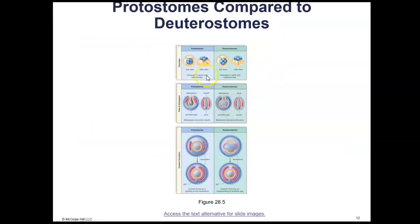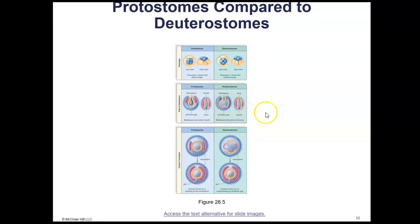Here are some images that may help you understand. This is a picture of spiral cleavage and this is a picture of radial cleavage. In protostomes you can see the tissues: the beige layer is the endoderm, the pink is the mesoderm, and the blue is the ectoderm. You can see that in protostomes the coelom forms by a splitting of the mesoderm, and in deuterostomes the coelom forms by an outpocketing of the primitive gut. It also shows that in the protostome the first opening is the mouth, and in deuterostomes the second opening is the mouth.